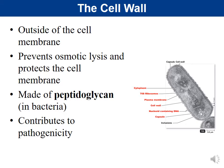Most bacterial cell walls are made primarily of peptidoglycan. Peptido refers to protein, glycan refers to sugar. So peptidoglycan is a mixture of sugars and proteins put together. The cell wall often contributes to pathogenicity, which is basically the ability for the bacteria to cause disease.